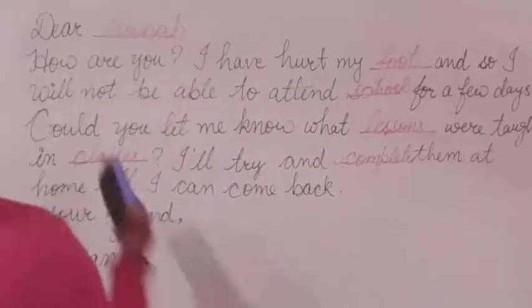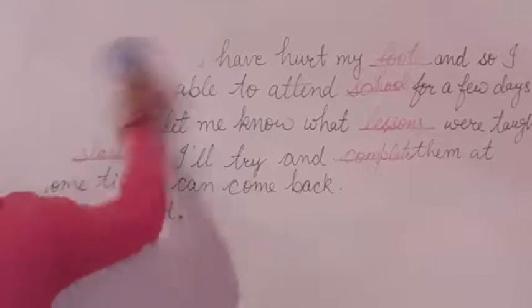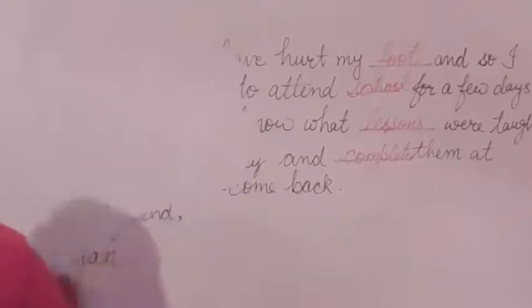Now the second exercise is about a paragraph. Describe your room and write five sentences about it. A few lines are given as hints, and according to those you will complete your paragraph.